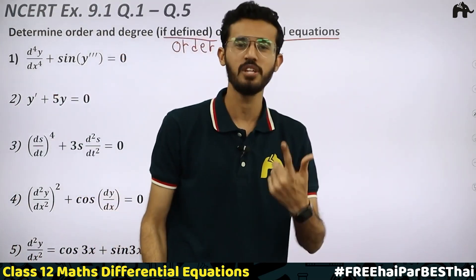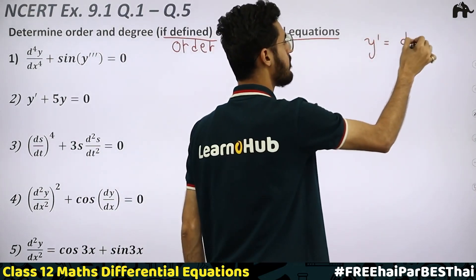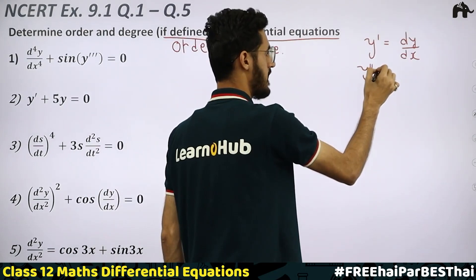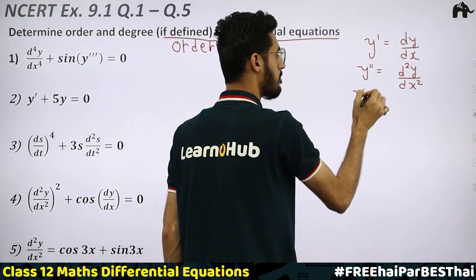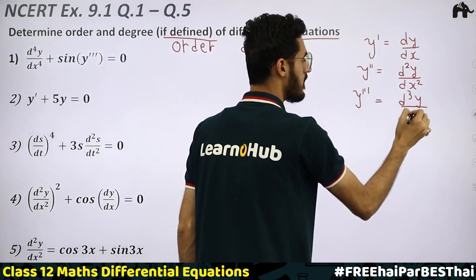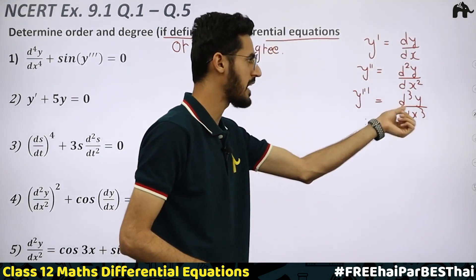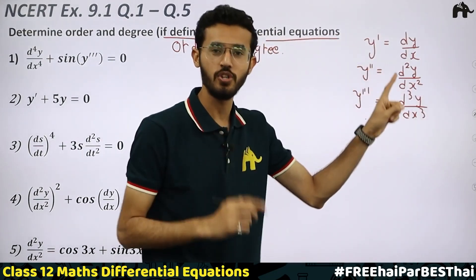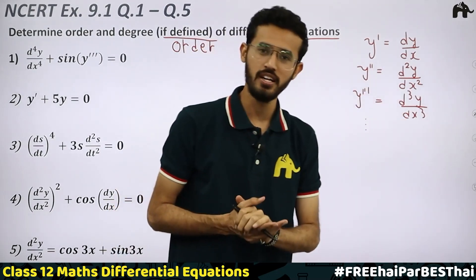If you don't know, let's understand quickly. y-dash is what we call dy/dx. If we differentiate again, we get y double-dash, which we call d²y/dx². Differentiating again gives y triple-dash, which we call d³y/dx³. This is the first order derivative, this is the second order derivative, and this is the third order derivative.